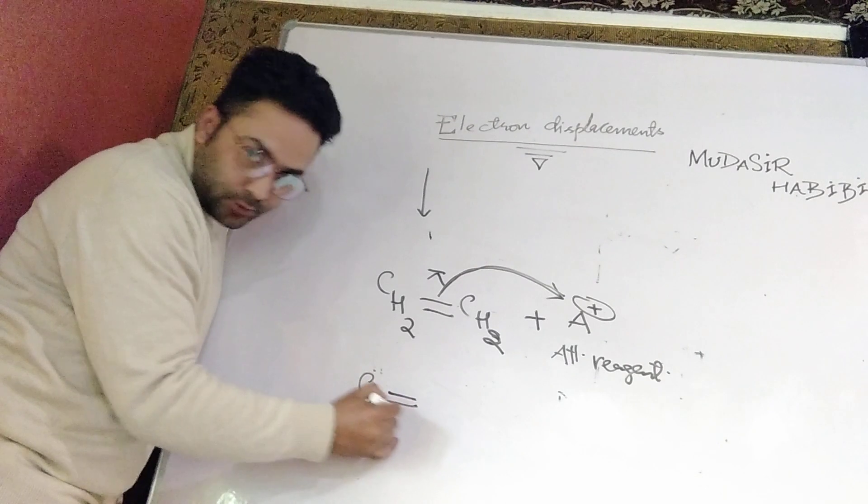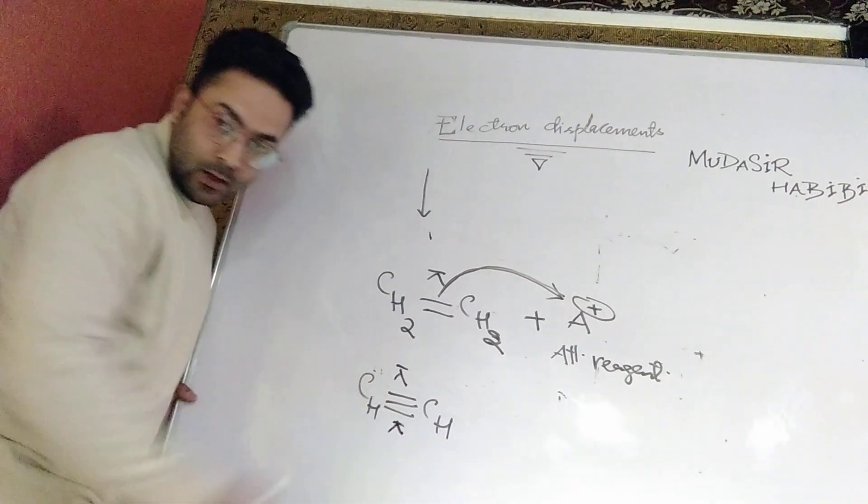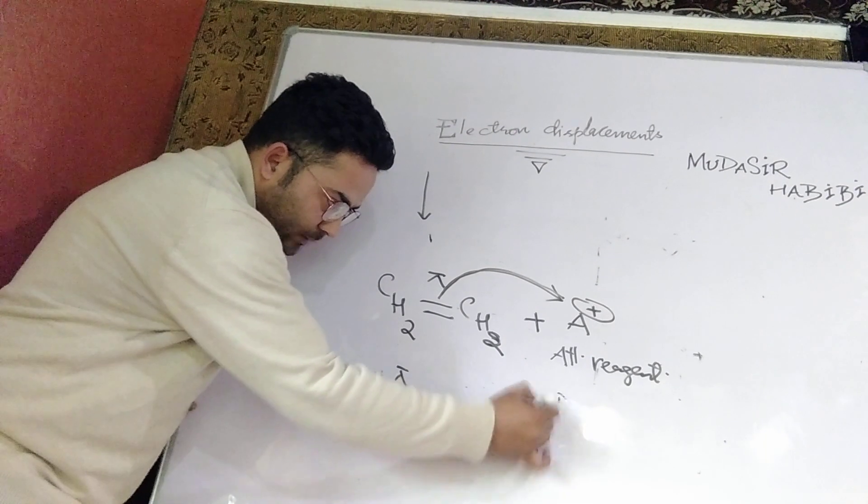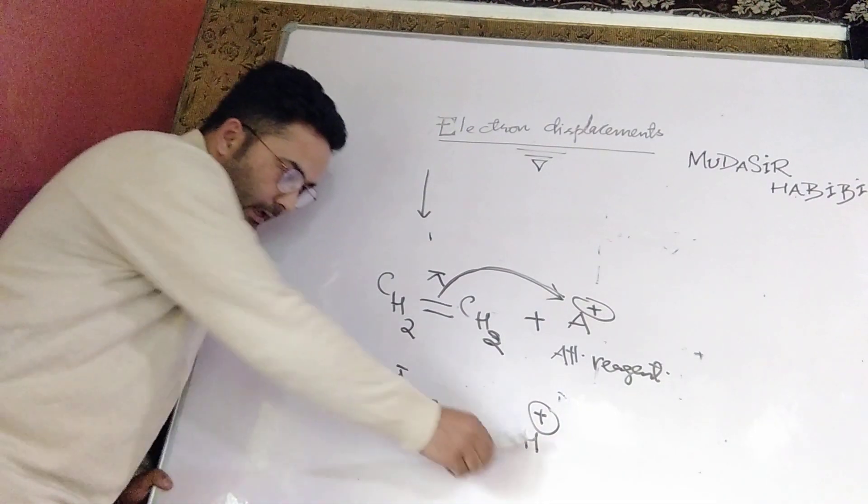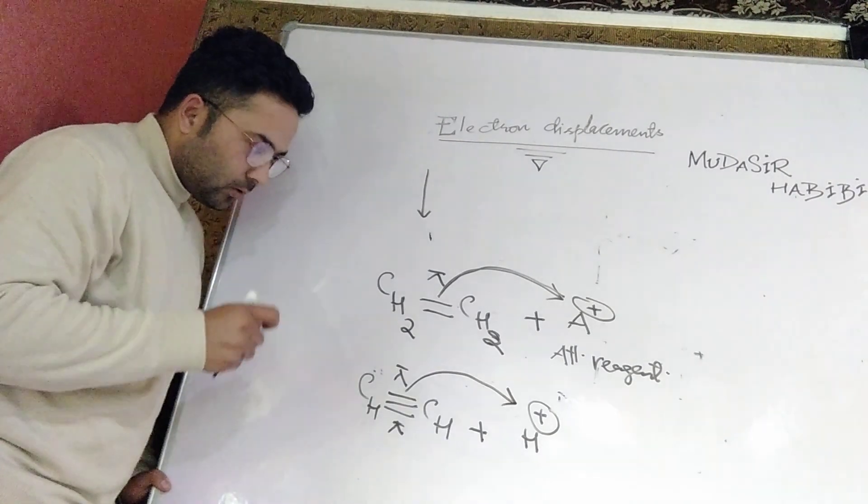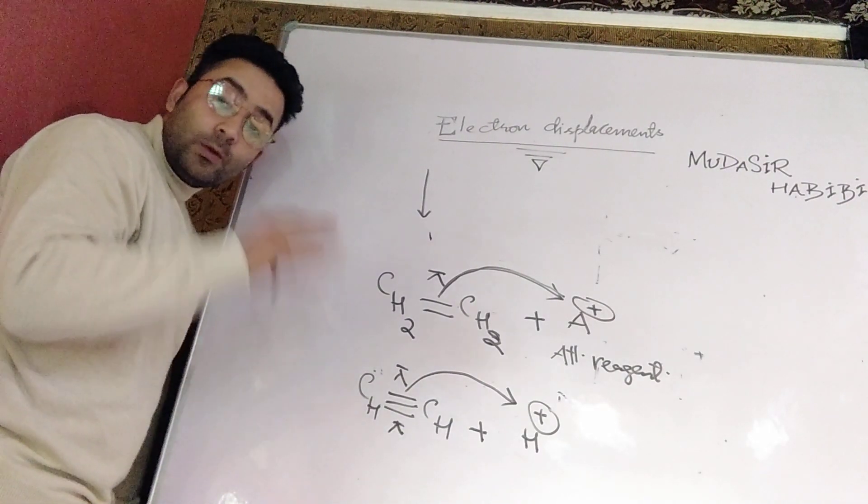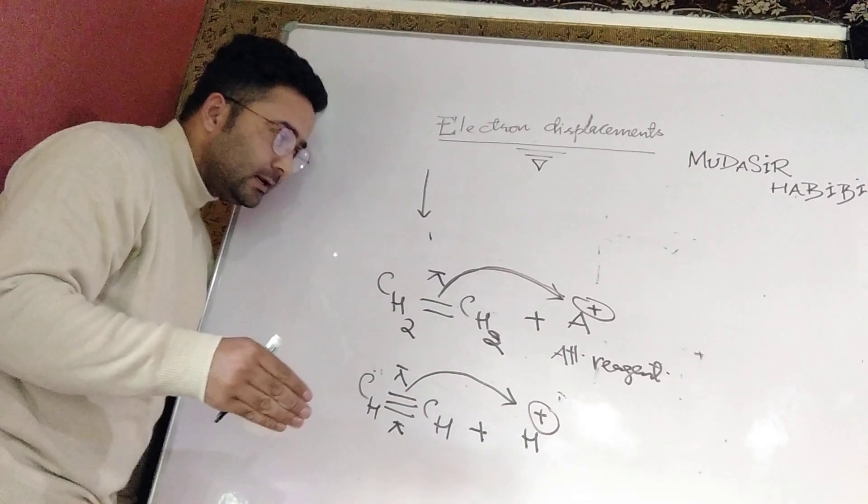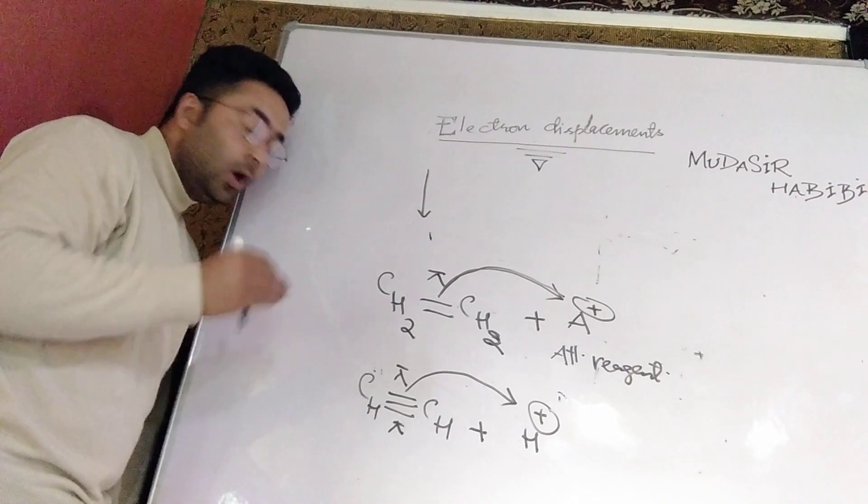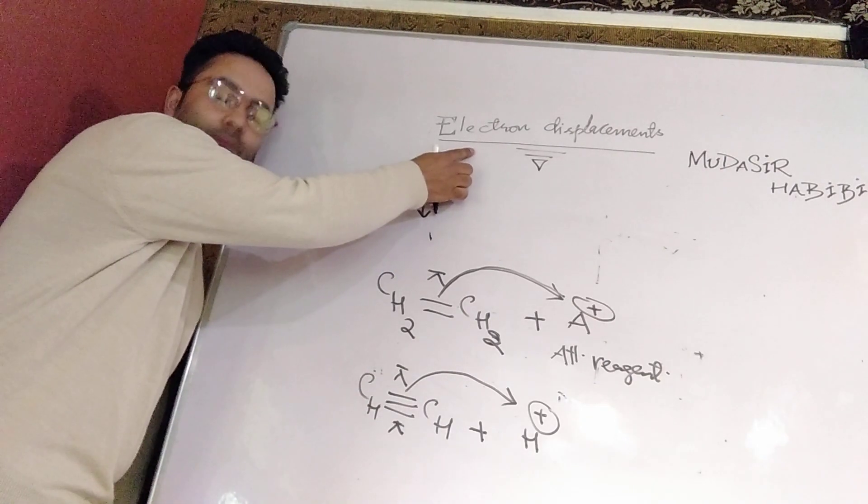Moment of electron happens when you add an attacking reagent to the unsaturated compound. Likewise, I will take another case of CH triple bond CH, the ethyne molecule, which also has two pi bonds. To this molecule, if we are going to add, for example, H-positive ion, which is once again electron deficient, this electron deficient proton will also withdraw this pi bond. So this electron shift is possible when we add an attacking reagent. This is not compulsory that you have a positively charged species; you can add a negatively charged species or electron donating species. So the pi bond will shift, and that is one case of electron displacement.